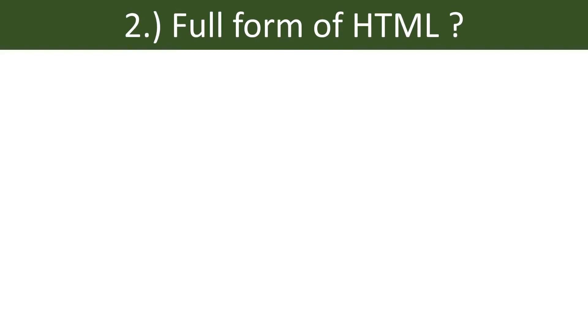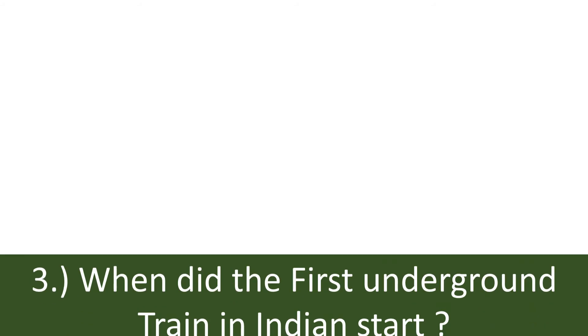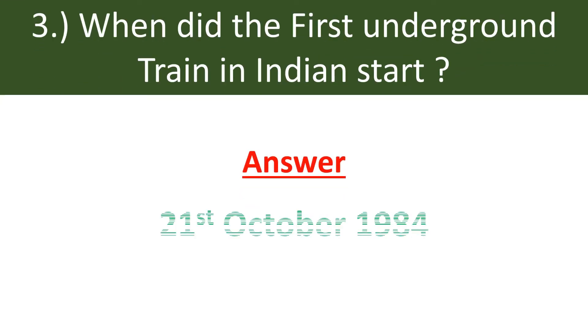Question number two: Full form of HTML. Correct answer is Hypertext Markup Language. Question number three: When did the first underground train in India start? Correct answer is 21 October 1984.